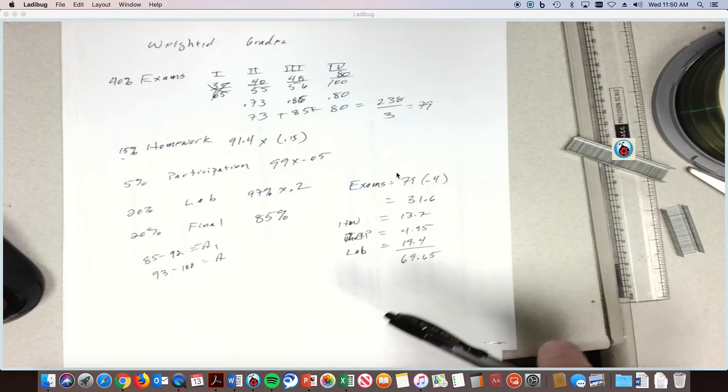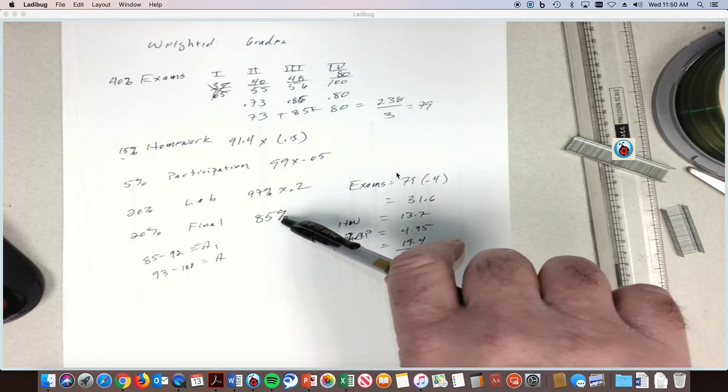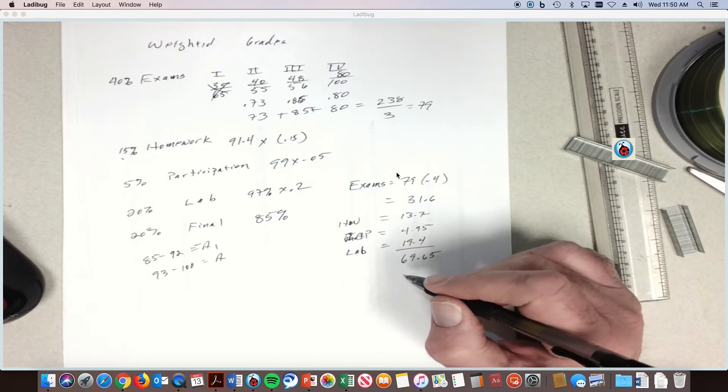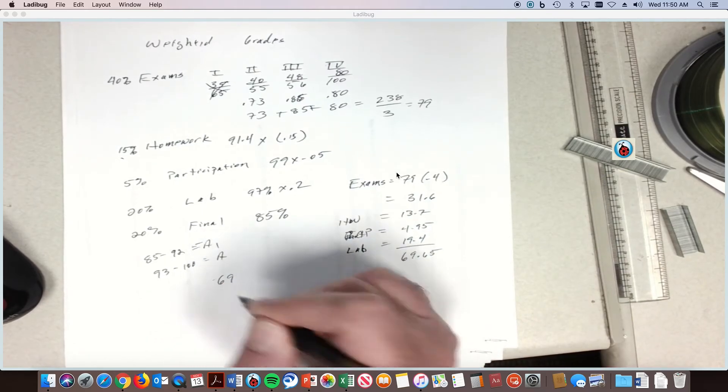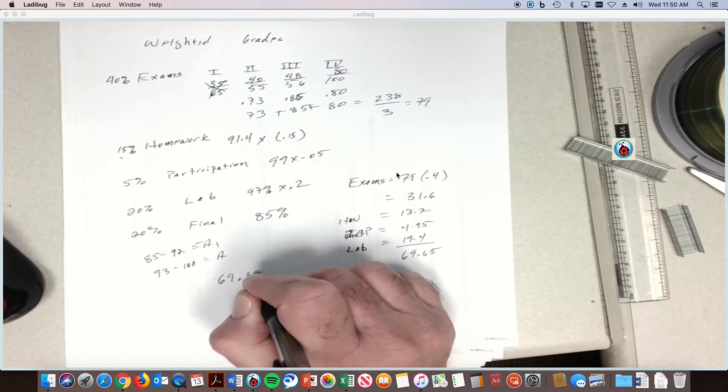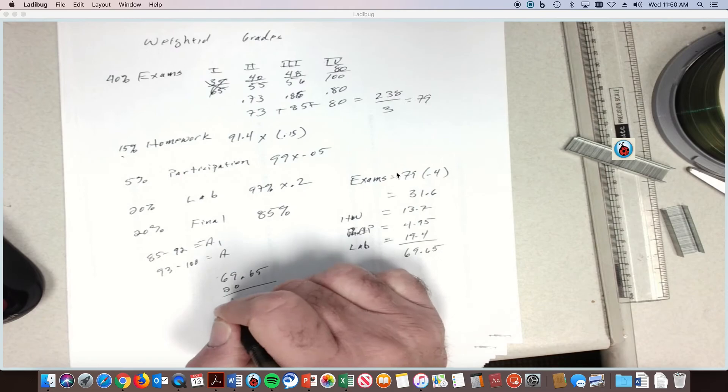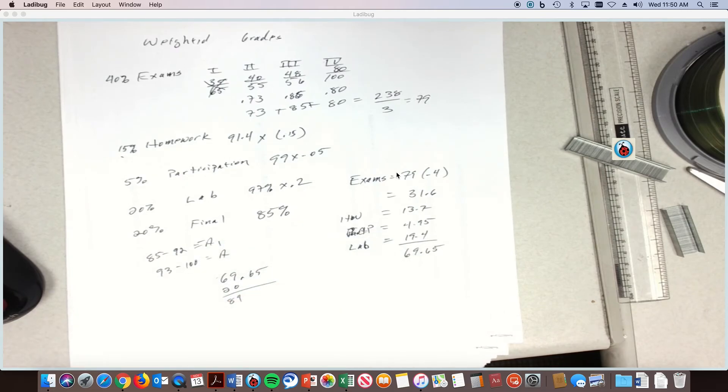Where do we go? Well I need to get... let's just say if we got a hundred percent. If I got a hundred percent on the final, so if I had a 69.65 coming in and I got a hundred percent on the final, that means I'd get all 20 points, 20 percent. I get an 89 which would be an A minus.